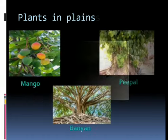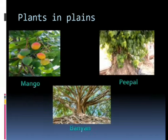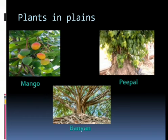Fourth, plants in plains. Plains receive moderate rainfall and the climate is neither too hot nor too cold. Trees such as mango, banyan, and peeple are grown in plains.